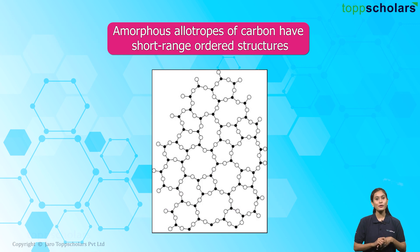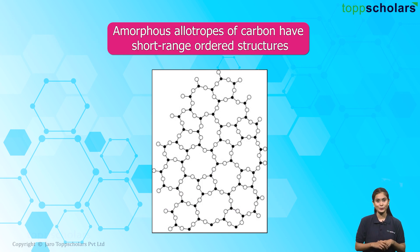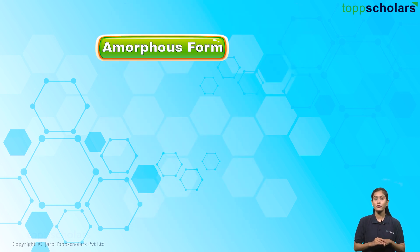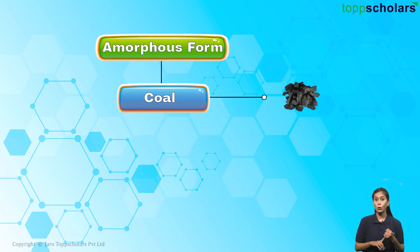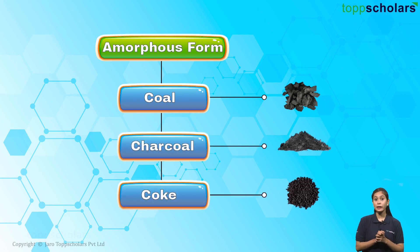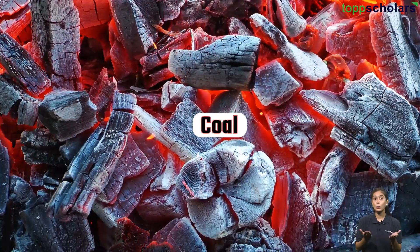Amorphous allotropes of carbon have a short-range ordered structure. The arrangement of carbon atoms is irregular. The amorphous allotropes of carbon are coal, charcoal, and coke. Let us go for the very first non-crystalline form of carbon which is coal.